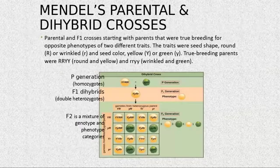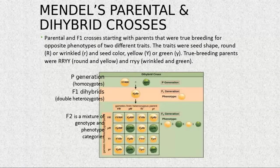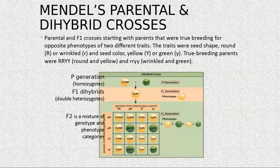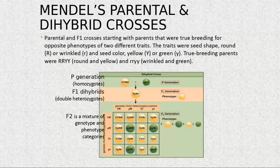Let's look again at the dihybrid cross with two traits. The traits are the color of the seeds and the texture — either yellow or green, and smooth/round or wrinkled. The ratio for the F2 generation from this dihybrid F1, which is a double heterozygote, is 9:3:3:1.